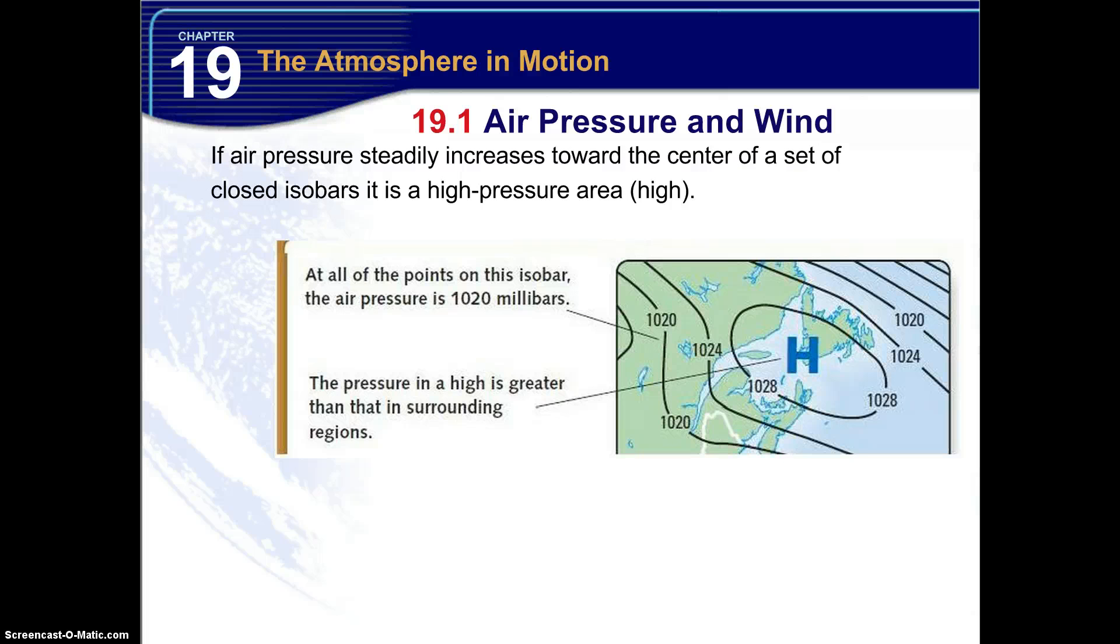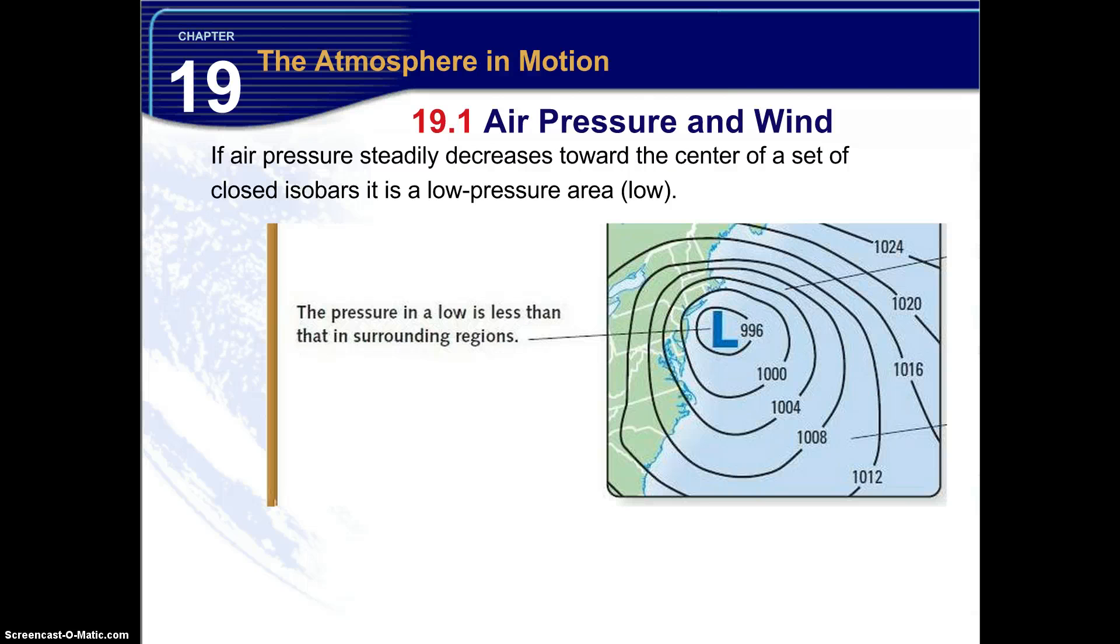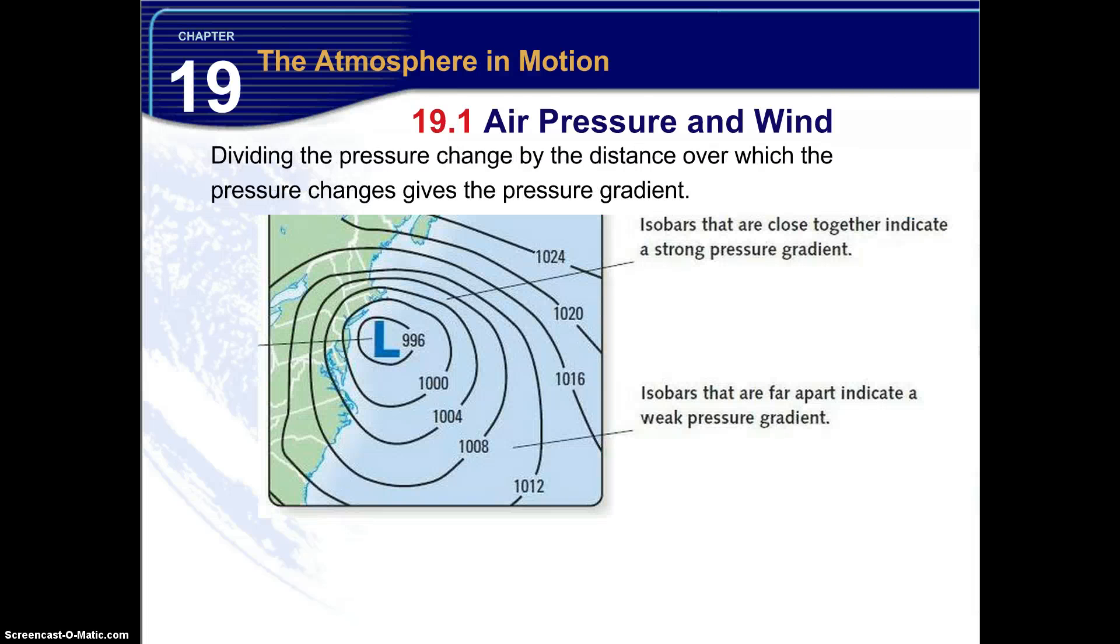Now if air pressure steadily increases toward the center of a set of closed isobars, it is considered a low pressure area, or a low. Now dividing the pressure change by the distance over which the pressure changes gives what we call the pressure gradient.